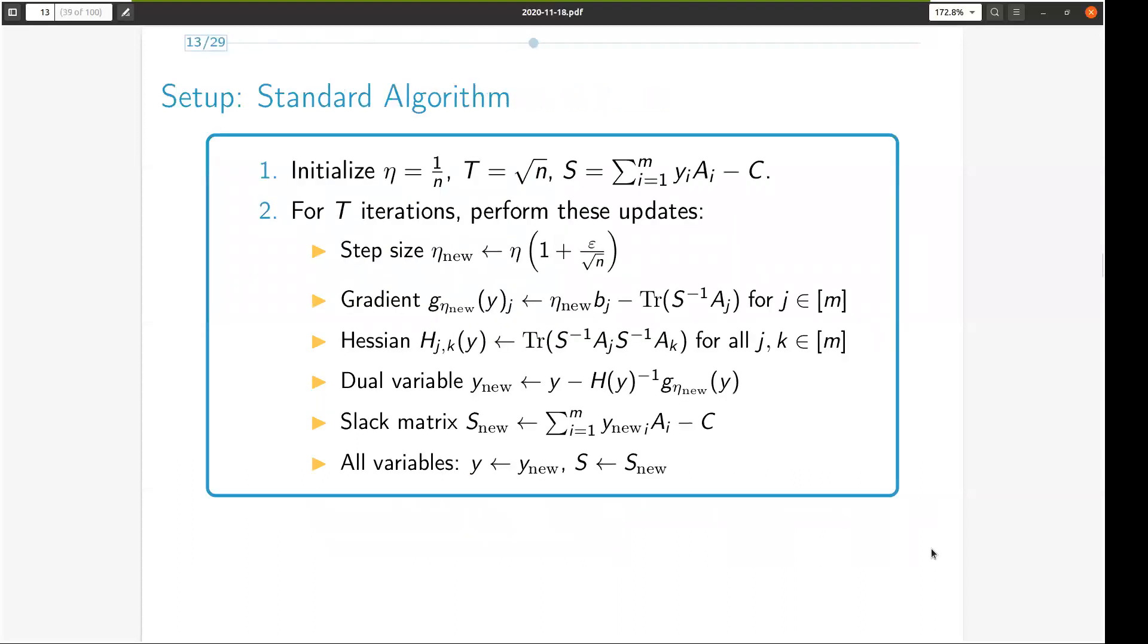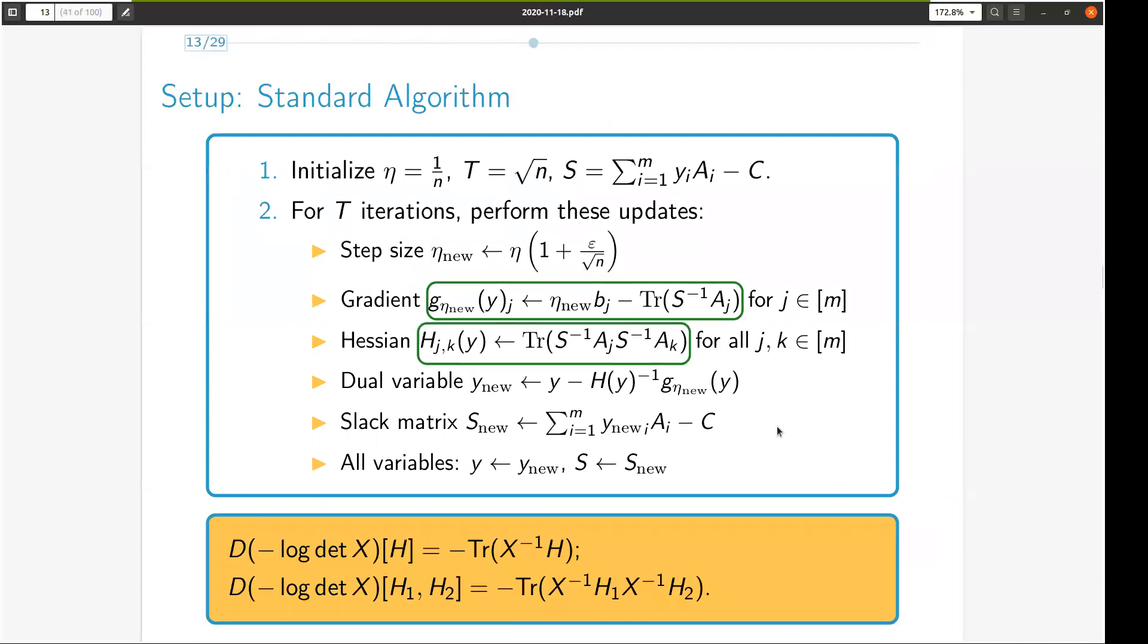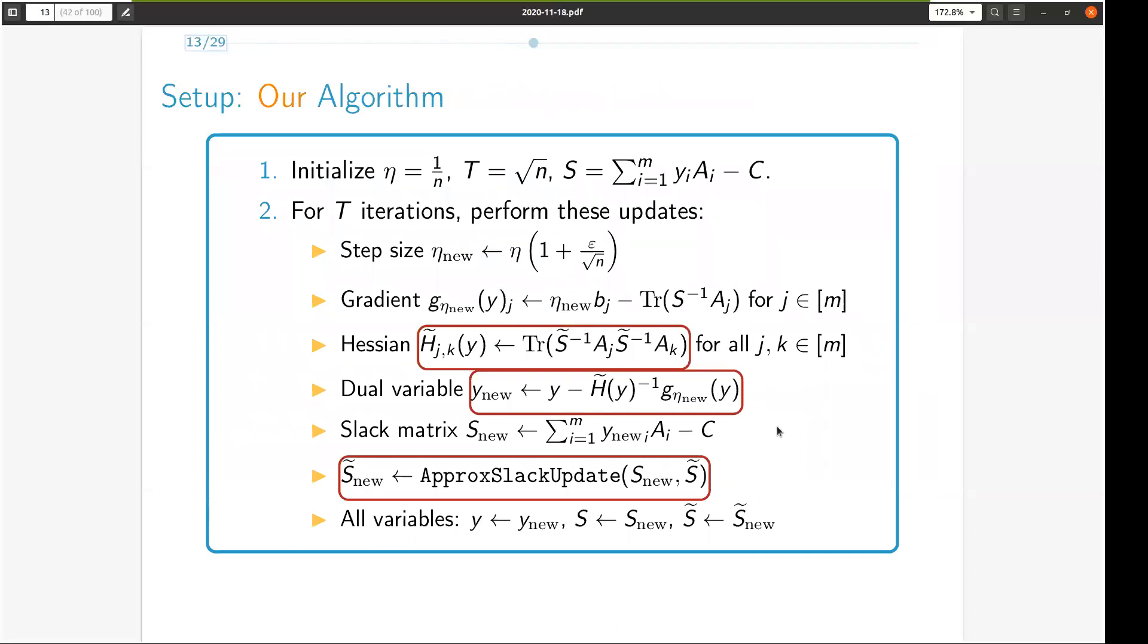Here's the detailed standard interior point method for our problem. The eta and dual variable y are updated as shown here. And here are the gradient and Hessian computations for our objective involving derivatives of the log determinant function. The change that we make to this algorithm is to construct a new matrix called S tilde using a function called approx slack update. And use this approximate slack matrix instead of the true slack matrix in computing the Hessian. Further, we use this approximate Hessian in computing the dual variable y.